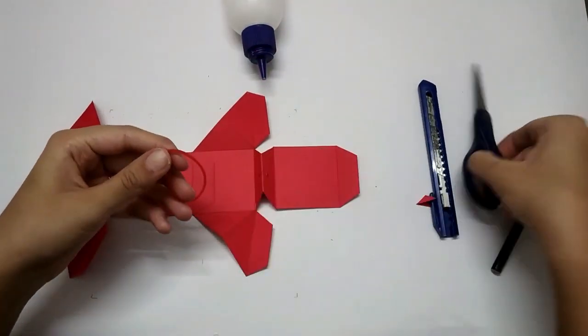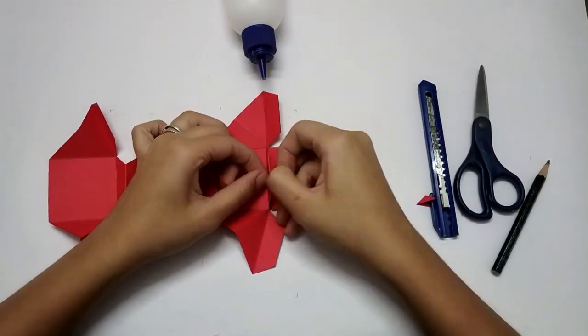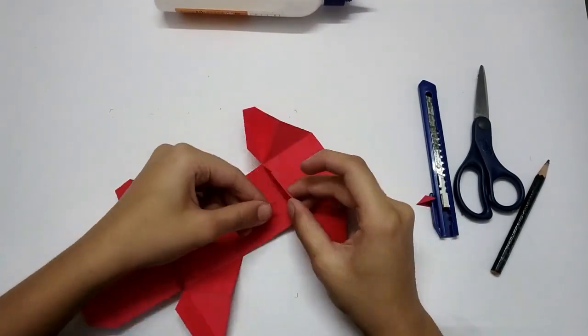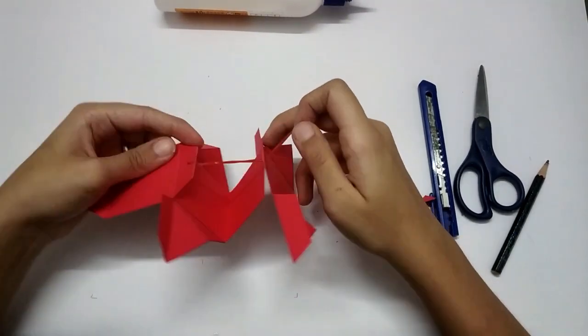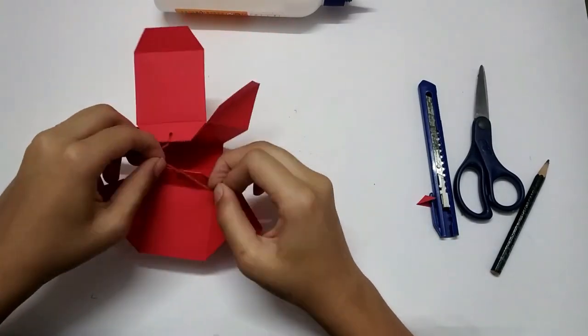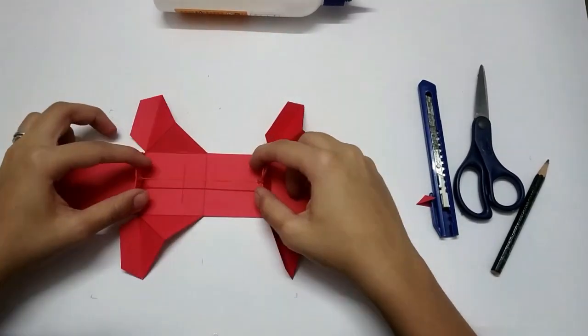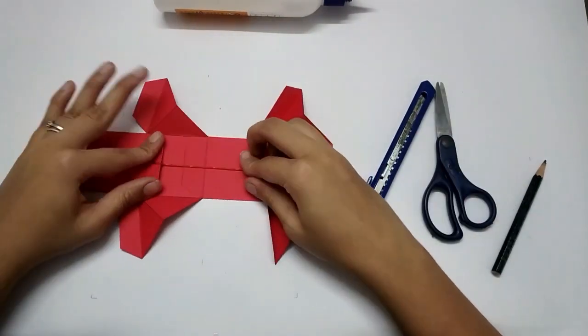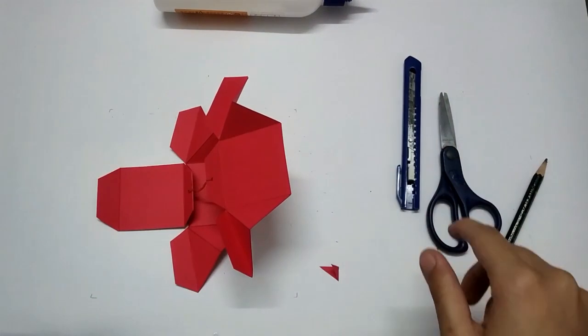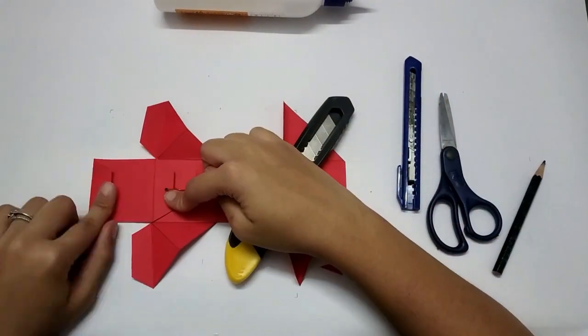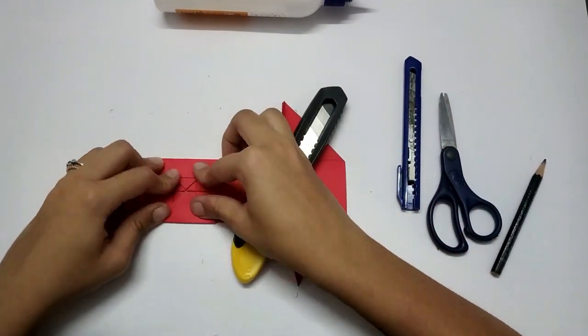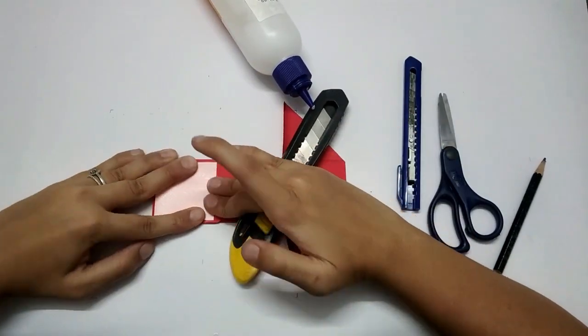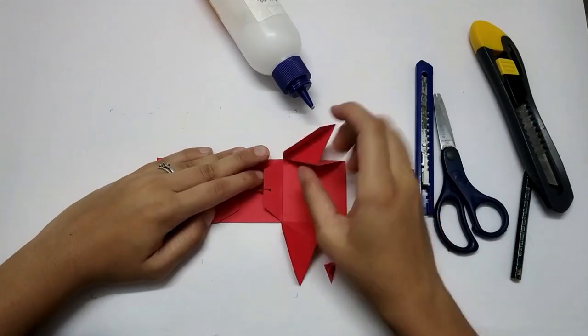Now take rubber band, cut it in half and tie it closely to each other like this. Keep something heavy to hold on. Now apply glue on the sides and paste it like this. Same on the other side.